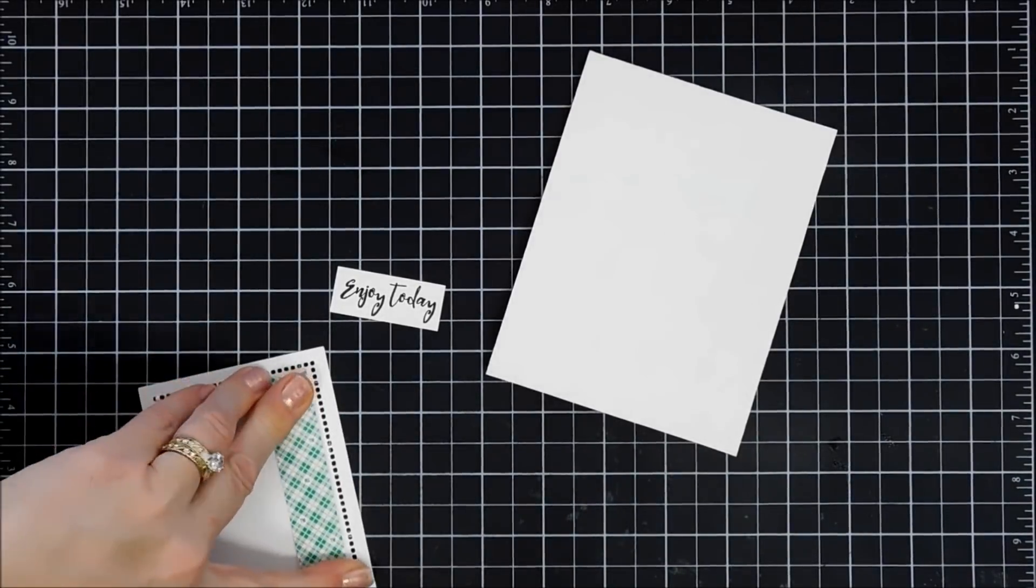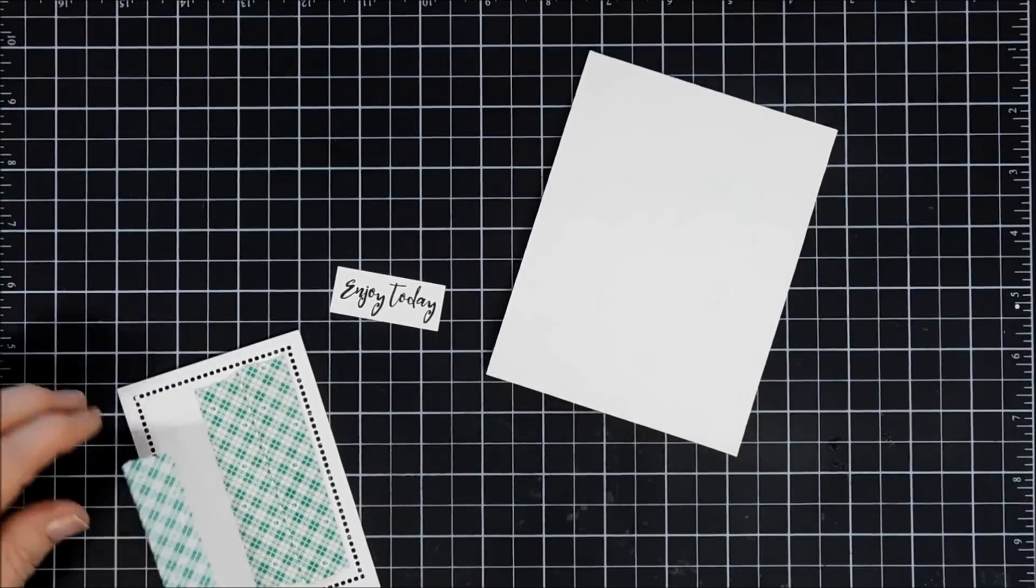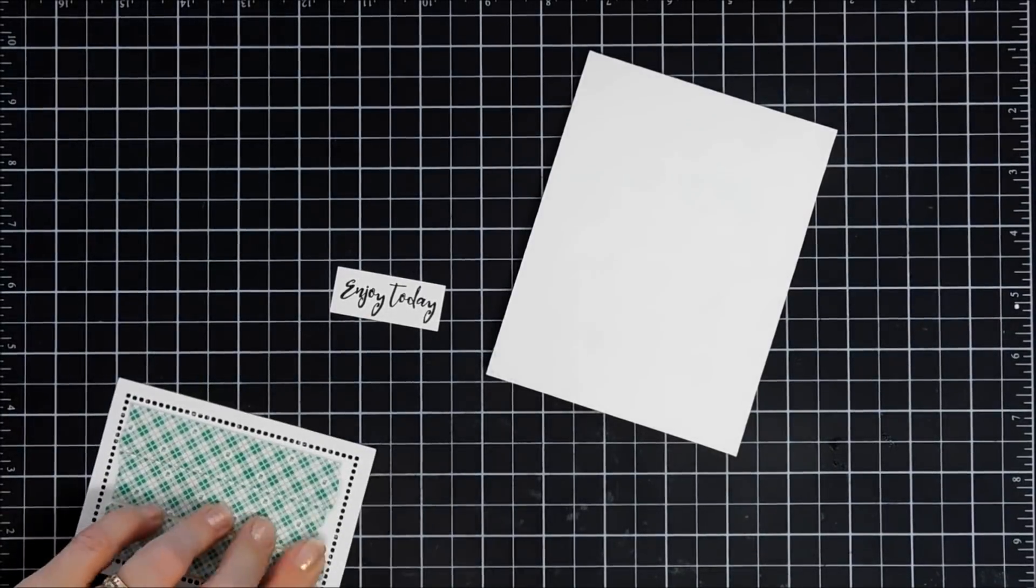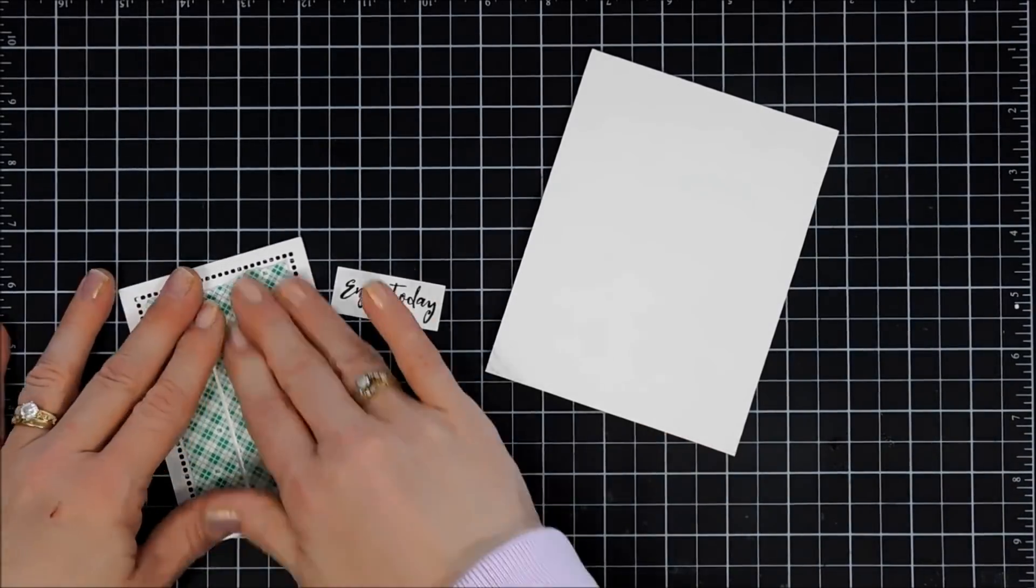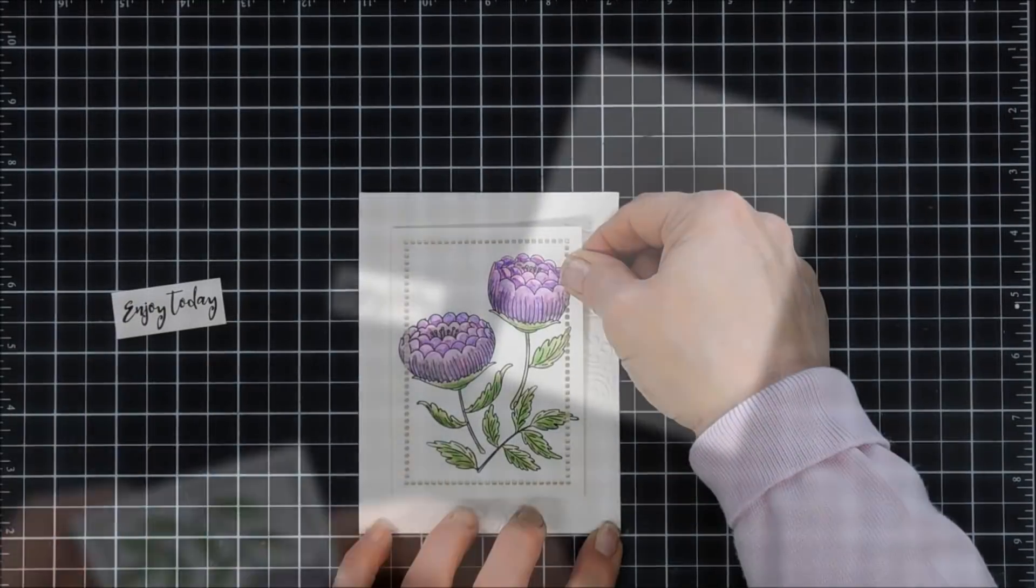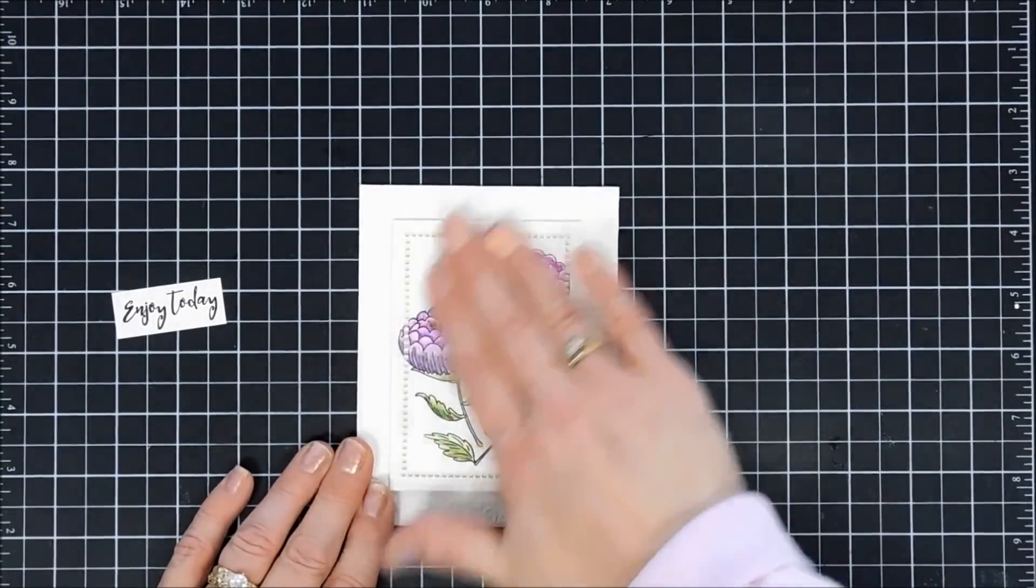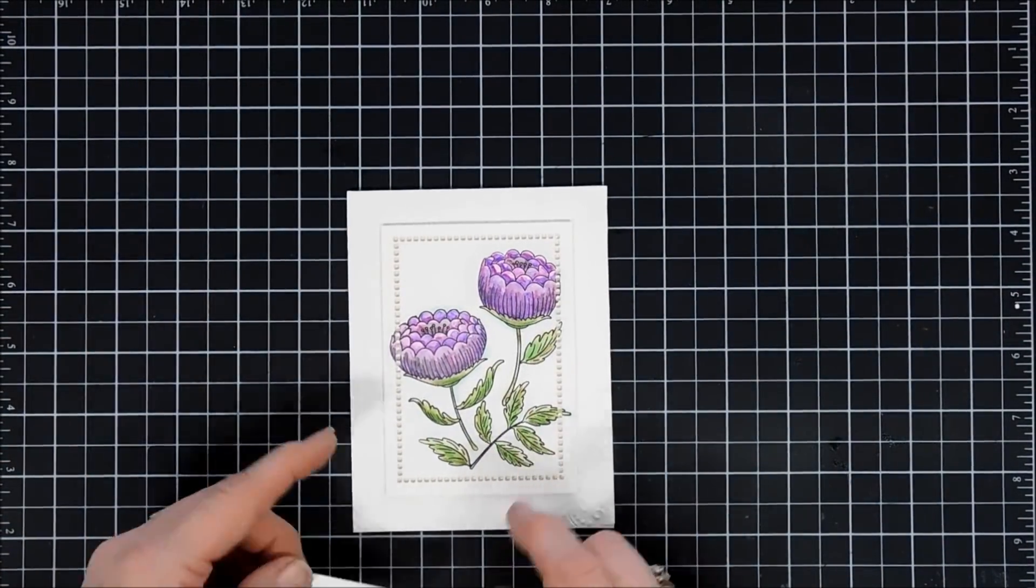For a little dimension, I'm going to pop up my panel with some foam tape. I had a little bit of overhanging here, so I'm going to use my scissors and trim that off. We're going to place this in the center of our card base. I love ivory and purple together.